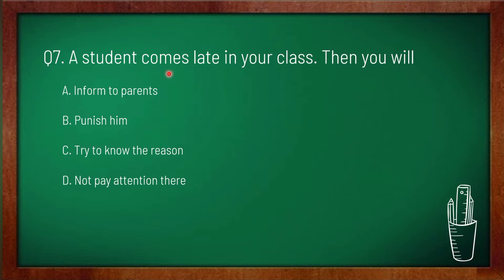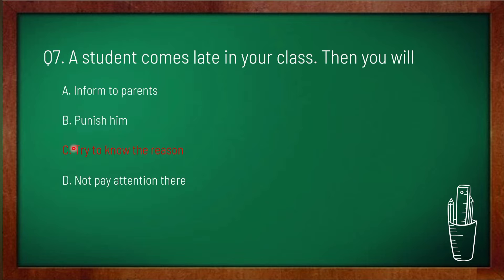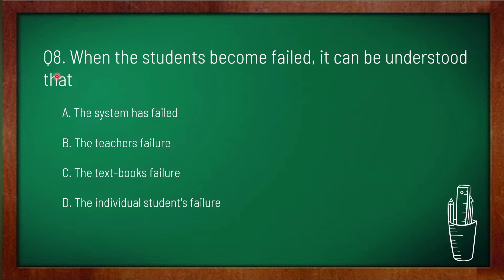Question 7: a student comes late to your class — what will you do? Option A: inform the parents, option B: punish him, option C: try to know the reason, option D: not pay attention. Option C is correct — try to know the reason when a student comes late to class.